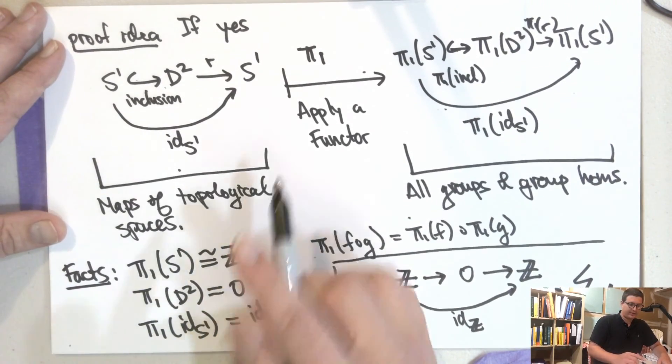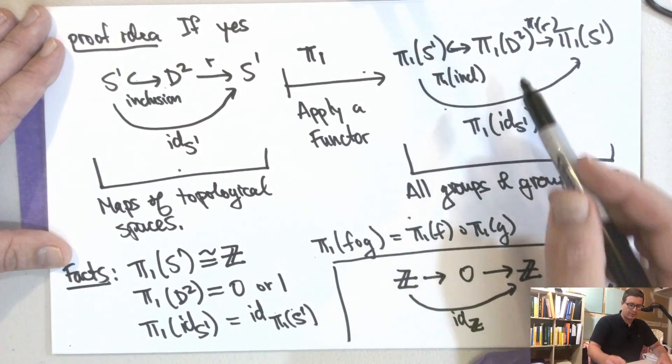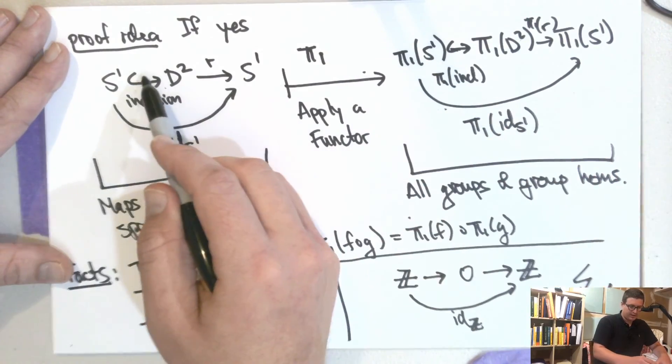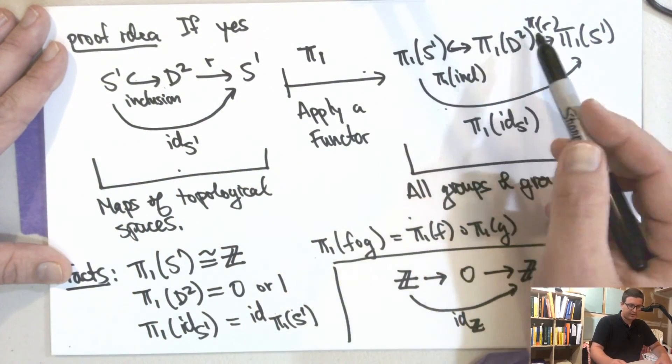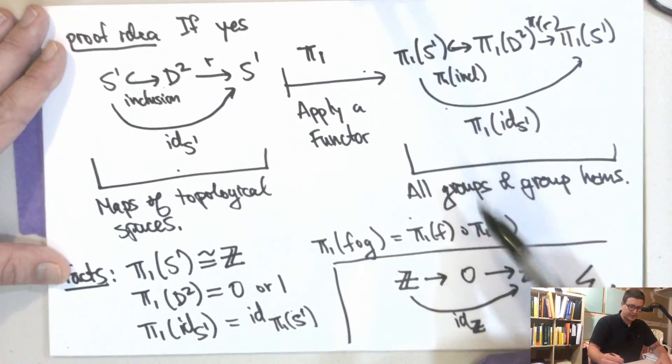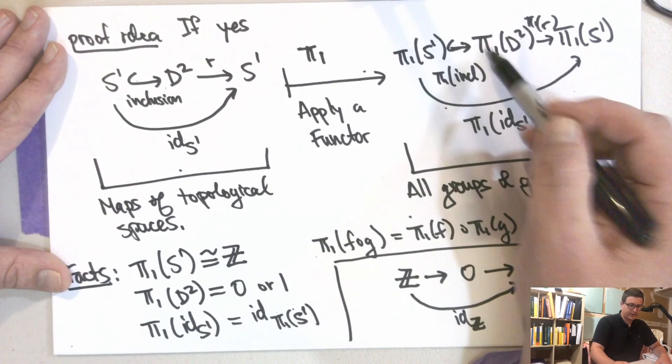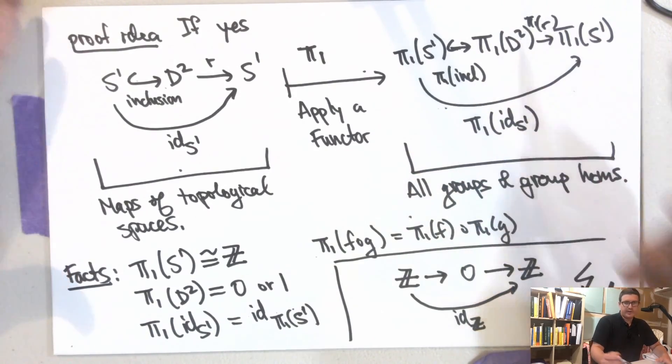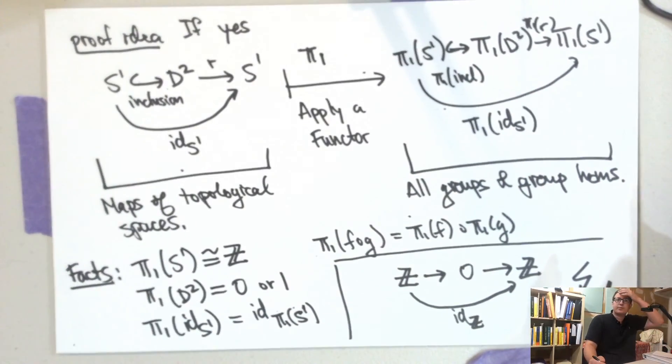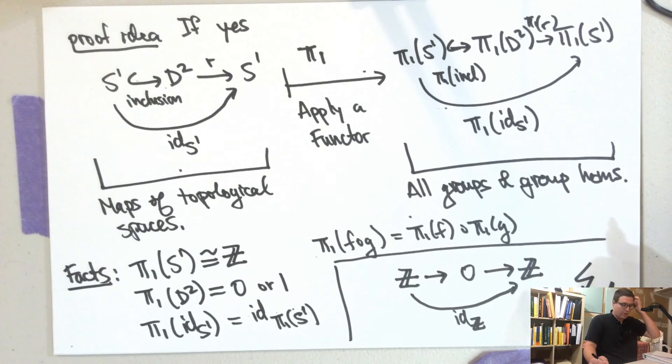And this gives a contradiction here. So because we can gather these facts together, we have that this functor here breaks up the homomorphisms or breaks up the continuous maps into maps of groups. And because this thing becomes the identity and we know this thing is trivial, we get a contradiction because of what happens with the groups. So this is kind of our first motivation for talking about functors.